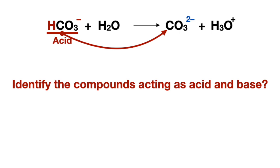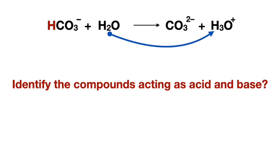It became −2 charge in the products, meaning it became more negative — or in other words, it was more positive as a reactant, making it the acid. You could also follow the other reactant to the product side to see that it accepted the proton and became positively charged, making it the base.